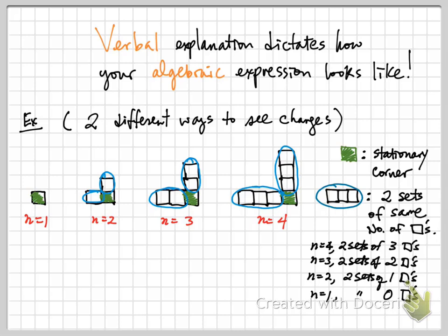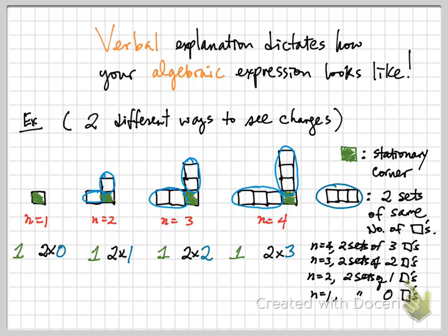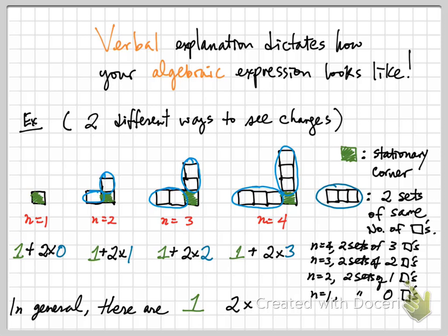Now that I've observed the change verbally, I can express this using an algebraic expression. Since there is a stationary corner square in each figure, that contributes a 1. In n=1, I get two sets of 0 squares: 1 + 2×0. In n=2, two sets of 1: 1 + 2×1. In n=3, two sets of 2: 1 + 2×2. In n=4, two sets of 3: 1 + 2×3. The total is the sum of the corner and the block. For general n, that gives the expression 1 + 2(n−1).